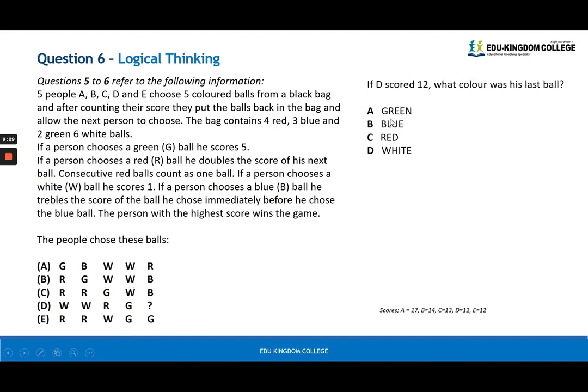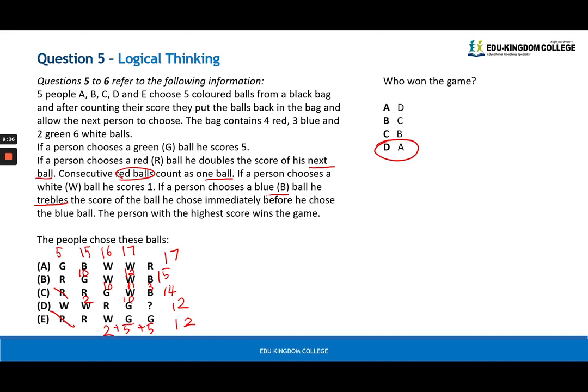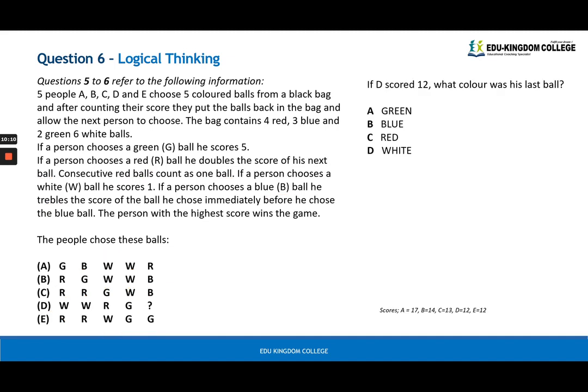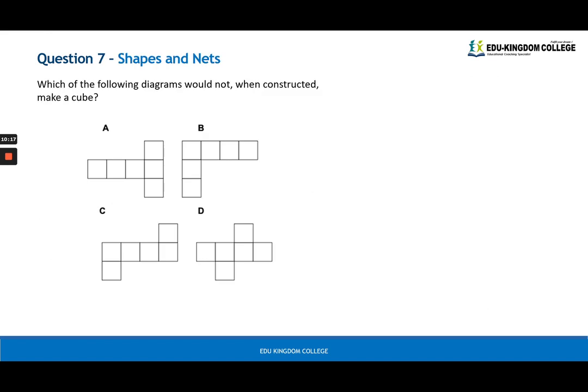And next one: if D scored 12, what was the color of their last ball? Let's go back. We can see that D already has a score of 12 without the last ball. If his final ball rendered a result of 12, that means that he or she did not increase the score, i.e. the last one provided a net change of zero. So which one would do that? The answer is red, because red only acts on the next ball that's happening, not the ball previous. So there's no next ball here, therefore the red will do nothing, it'll be zero. So the next color would be red.